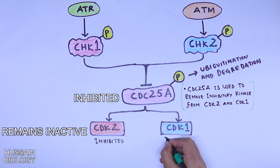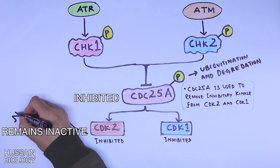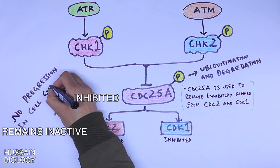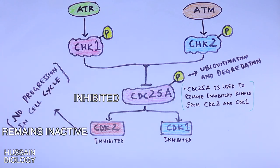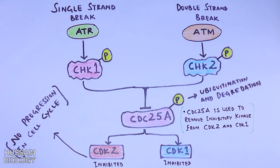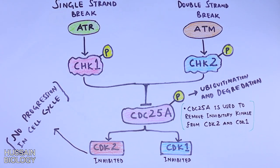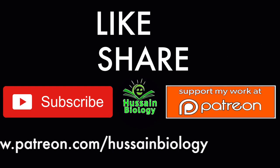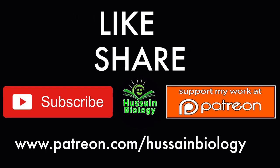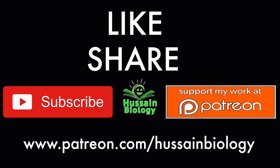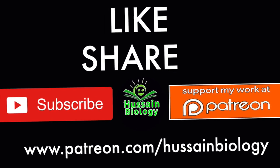When CDC25A itself is inhibited through degradation, it can no longer activate the CDK proteins, leaving CDK proteins in an inactive state and halting cell cycle progression. These are the checkpoints that come into play when there is DNA damage or errors in the G1 phase of the cell cycle. If you liked the video, give it a thumbs up, consider supporting on Patreon, and subscribe to the channel.